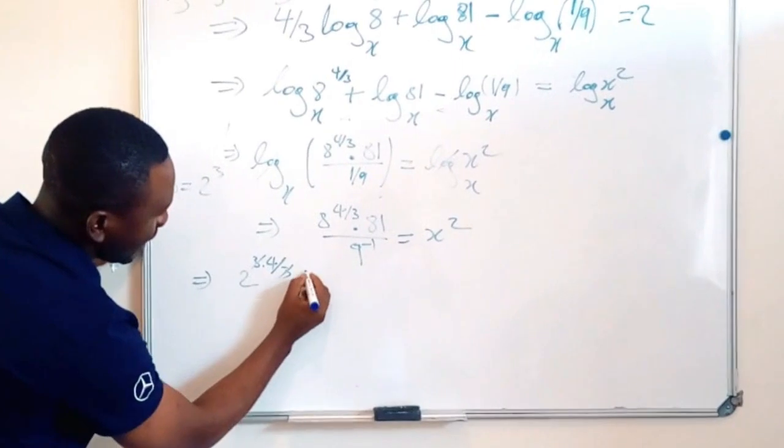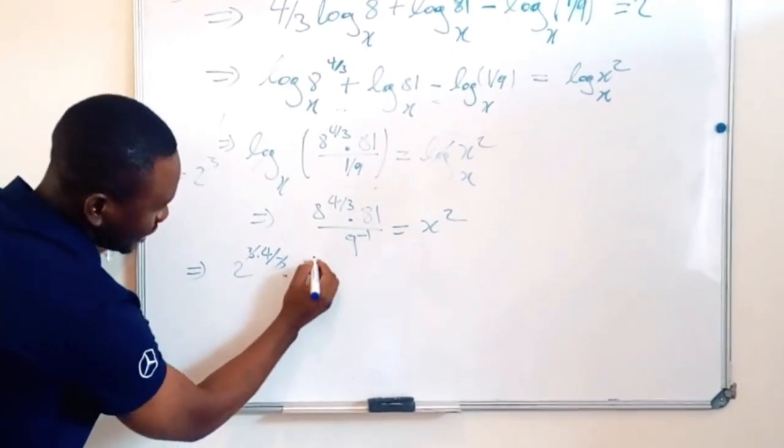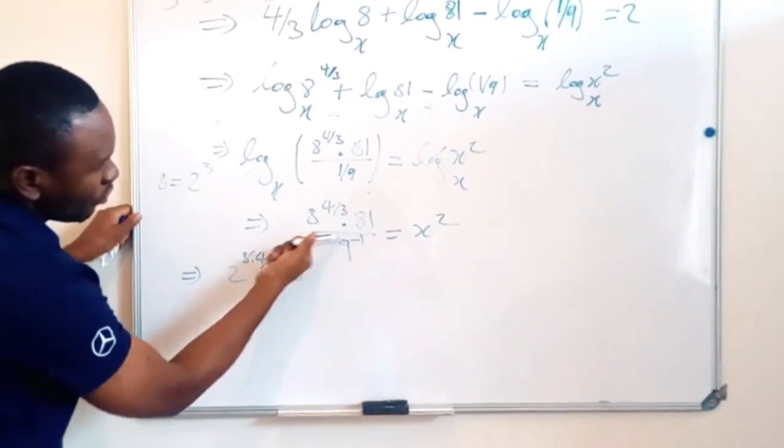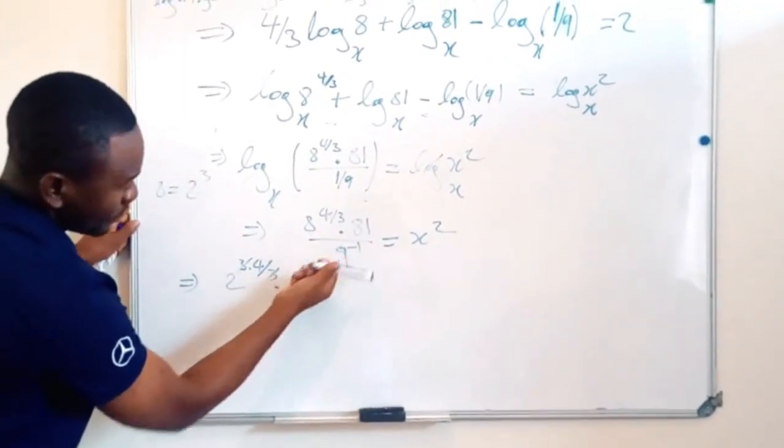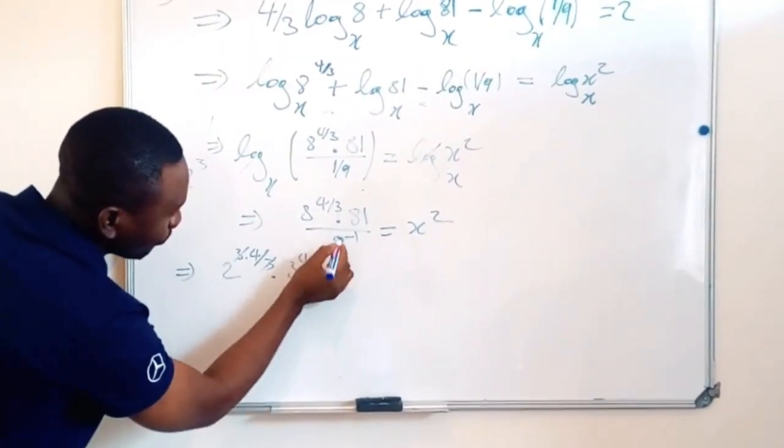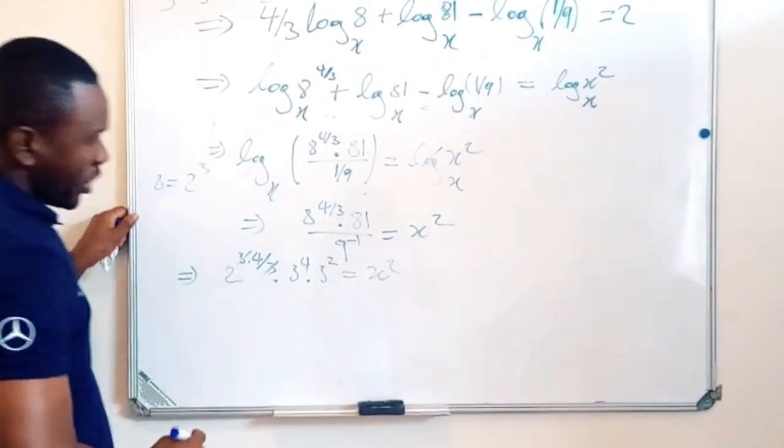And I have 81, so 3 exponent 4, and 9 to the minus 1, over 9 exponent minus 1. Then we have 3 exponent 2, and this is equal to x squared.